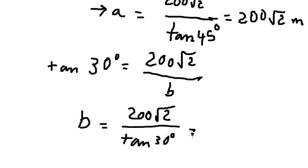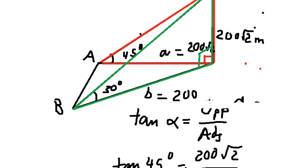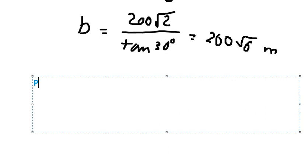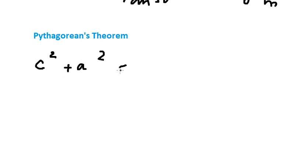We calculate this one and we have the value of 200 times the square root of 6. Now I will highlight the blue color here — this is the last one. We have a right angle here. We have B, we have A, and we can find the distance AB. That should be about the Pythagorean theorem. In this one, we use c squared plus a squared equals b squared.